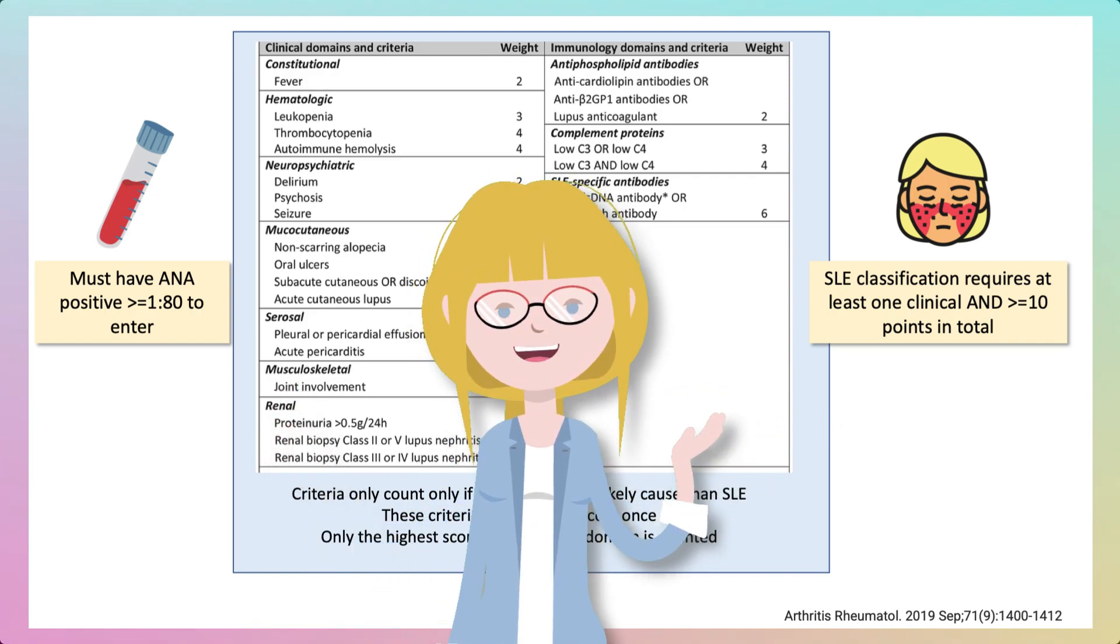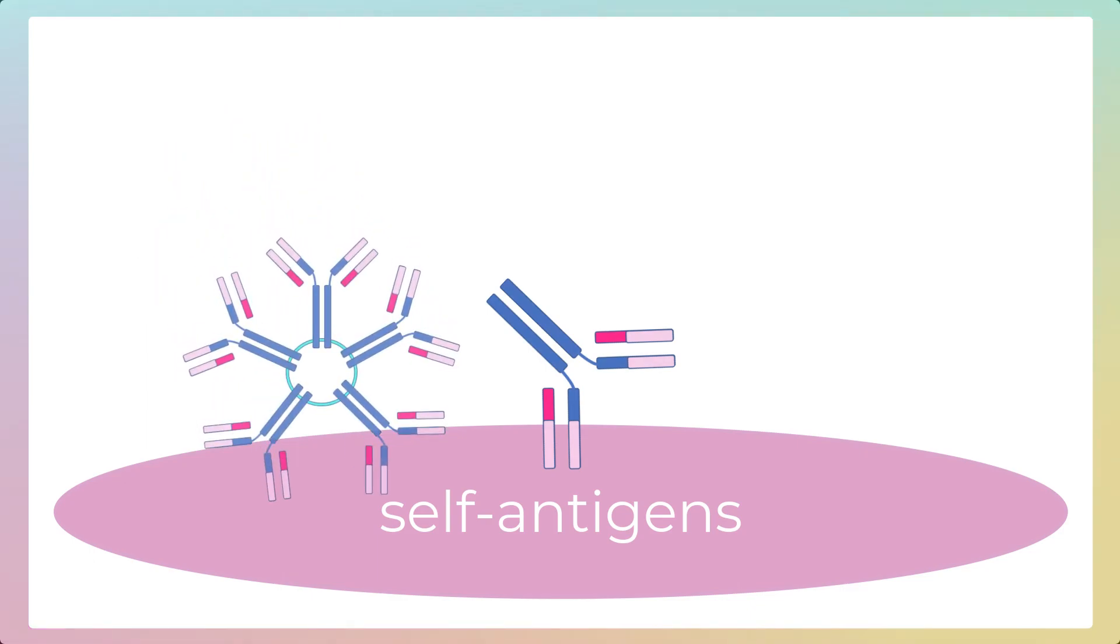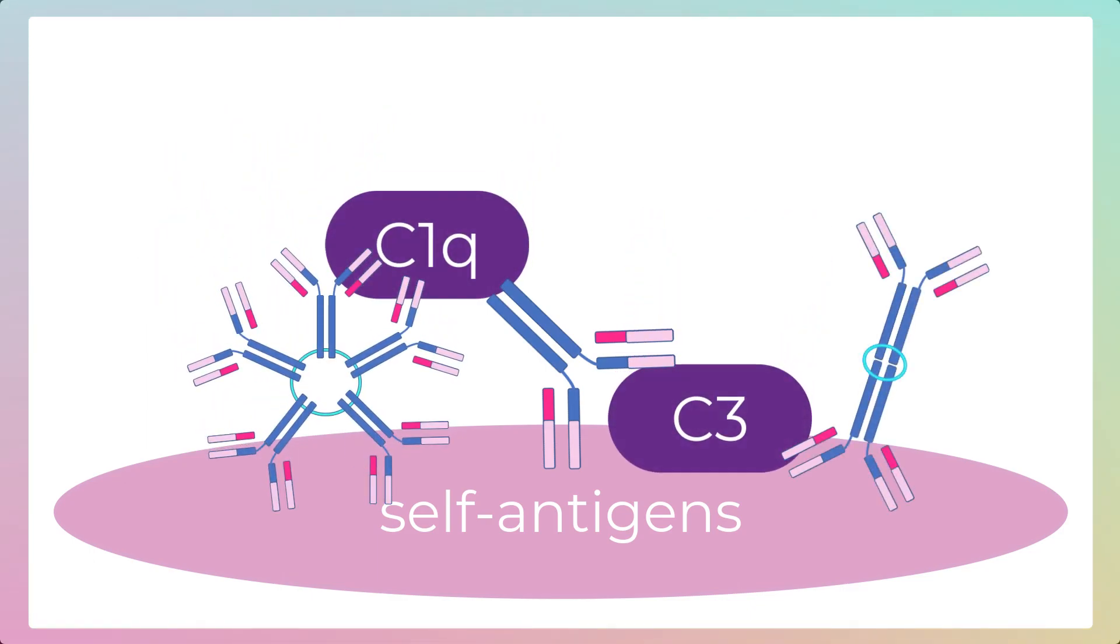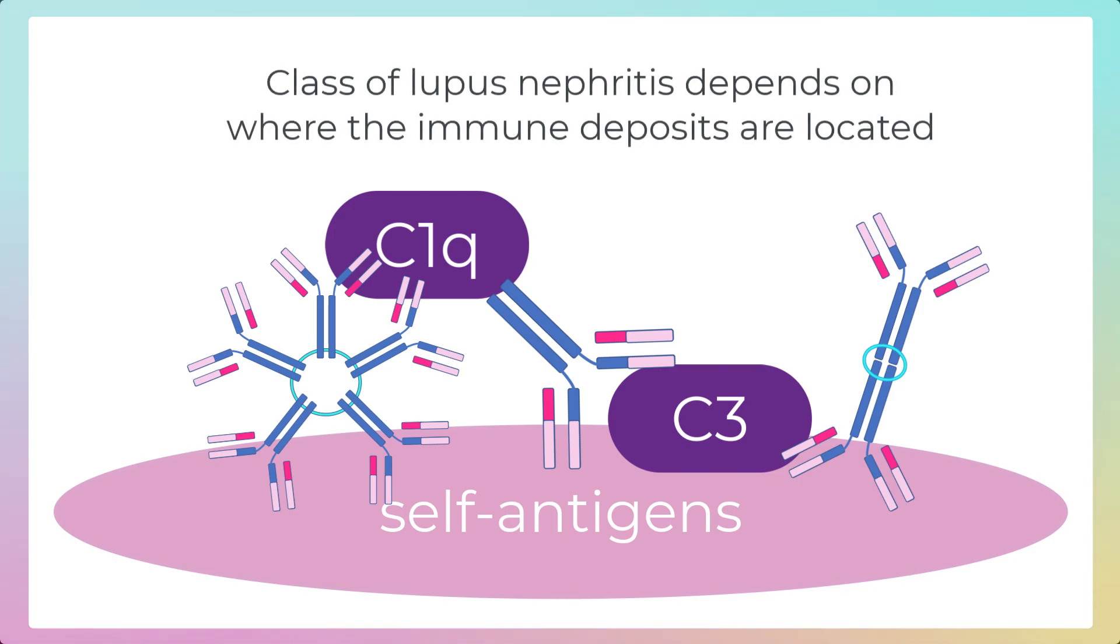So what might we see on that biopsy? Lupus broadly speaking is a disease of immune complex formation and complement activation. There are antibodies which can deposit in tissues and draw the complement cascade and immune cells into those tissues to cause damage. Depending on where those antibodies lodge in the glomerulus, you'll have different types of histological lesions.